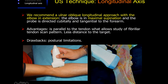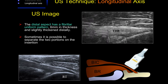For longitudinal ultrasound examination, we recommend an ulnar oblique approach with the elbow in extension and maximal supination, directing the transducer tangential to the forearm. This technique enables the evaluation of the fibrillar pattern of the tendon. Careful orientation of the probe is really essential to avoid misinterpretation from anisotropy artifacts. The distal aspect of the tendon has a really fibrillar uniform pattern, about 6 mm in thickness and slightly thickened distally.